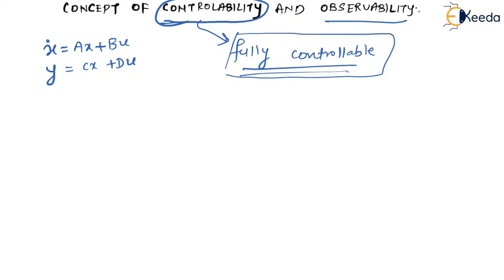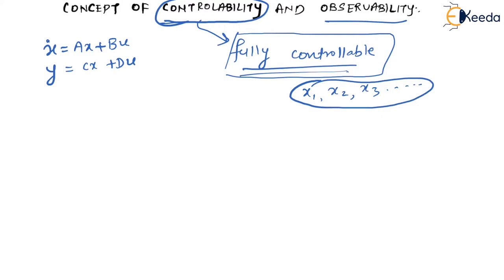We know that a particular system will have many states, like X1, X2, X3, and so on. Those states have to be controlled by some input, which is nothing but your U.